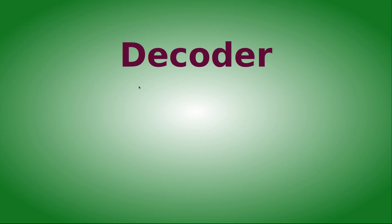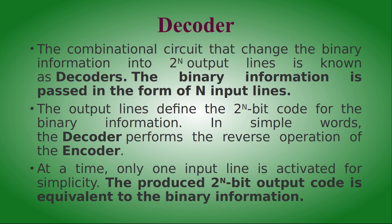Today I am going to take the topic of decoder, which belongs to the DFA Digital Computer Fundamental and Architecture subject. So what is a decoder? The decoder is the opposite or reverse operation of the encoder. The decoder consists of n input lines and 2^n output lines. For example, if it has three input lines, it will give eight output lines.